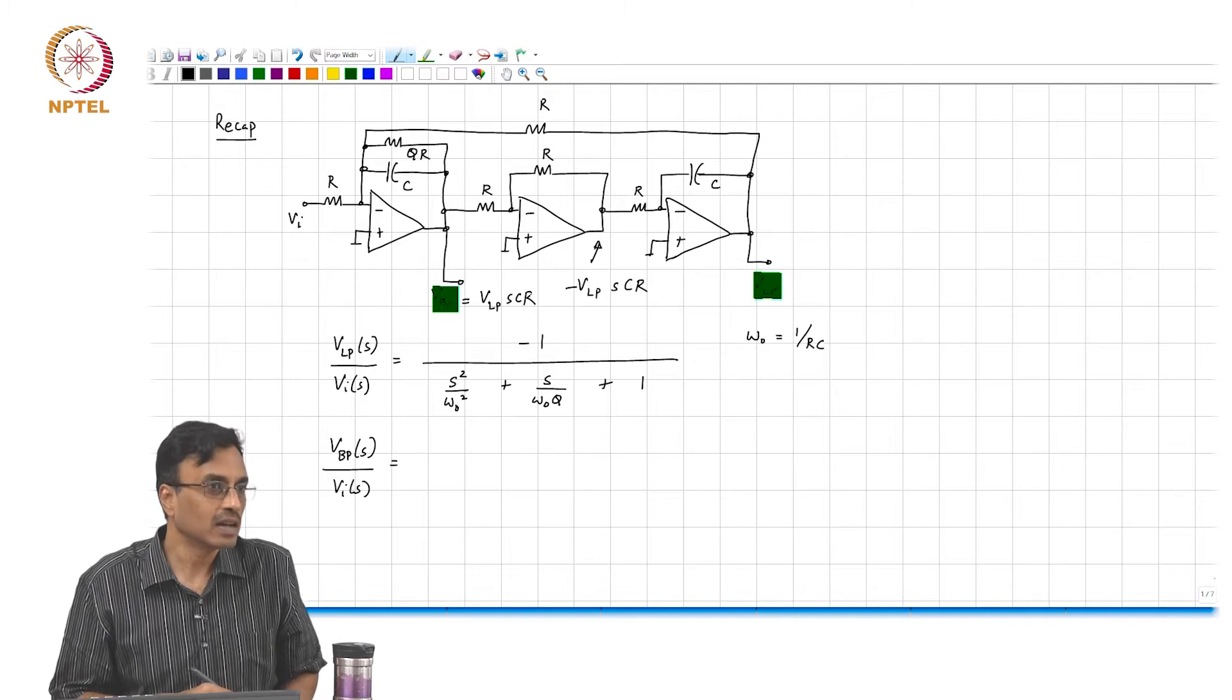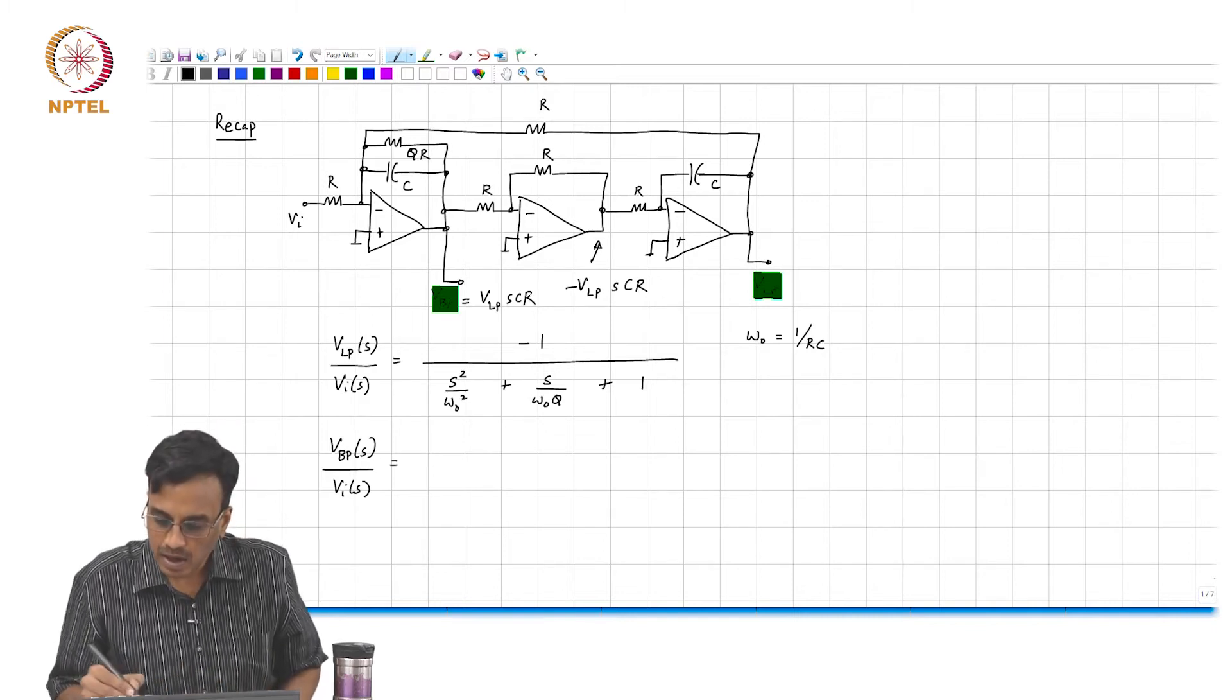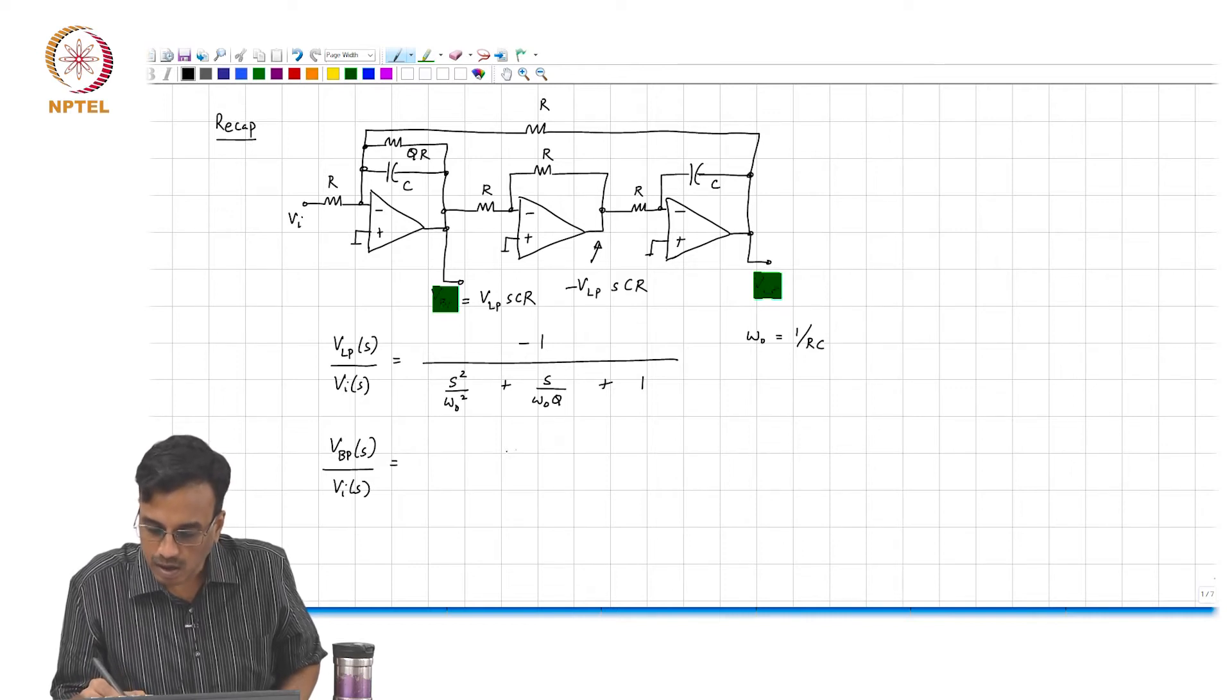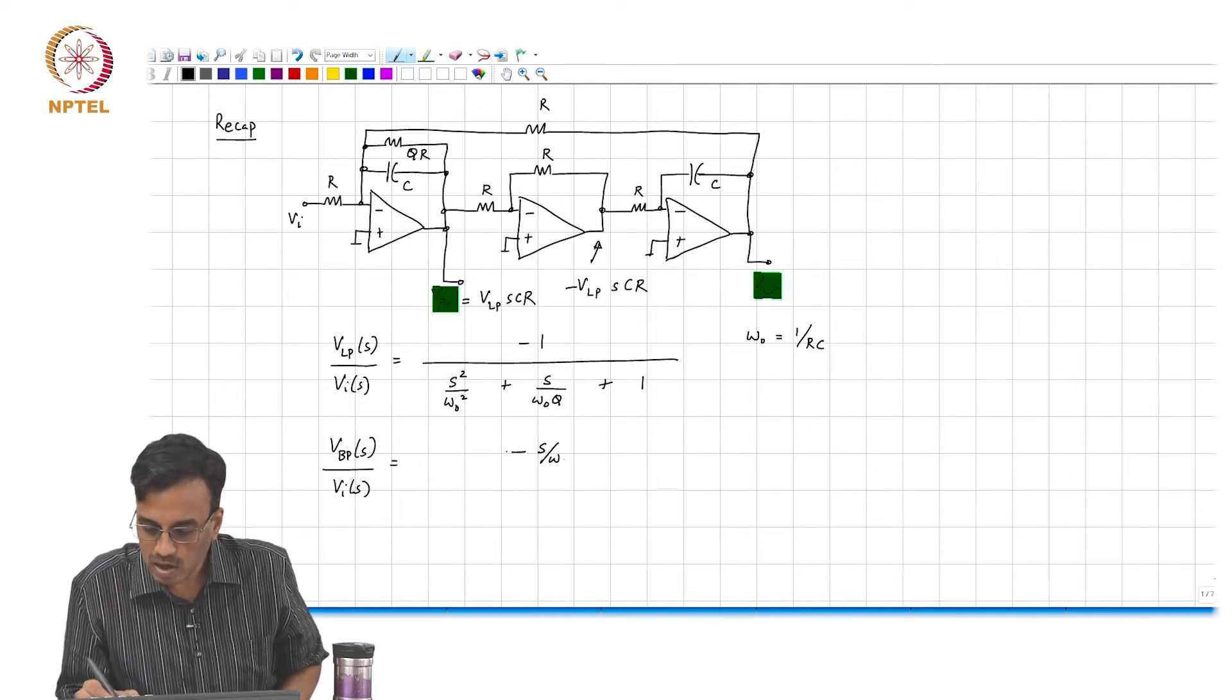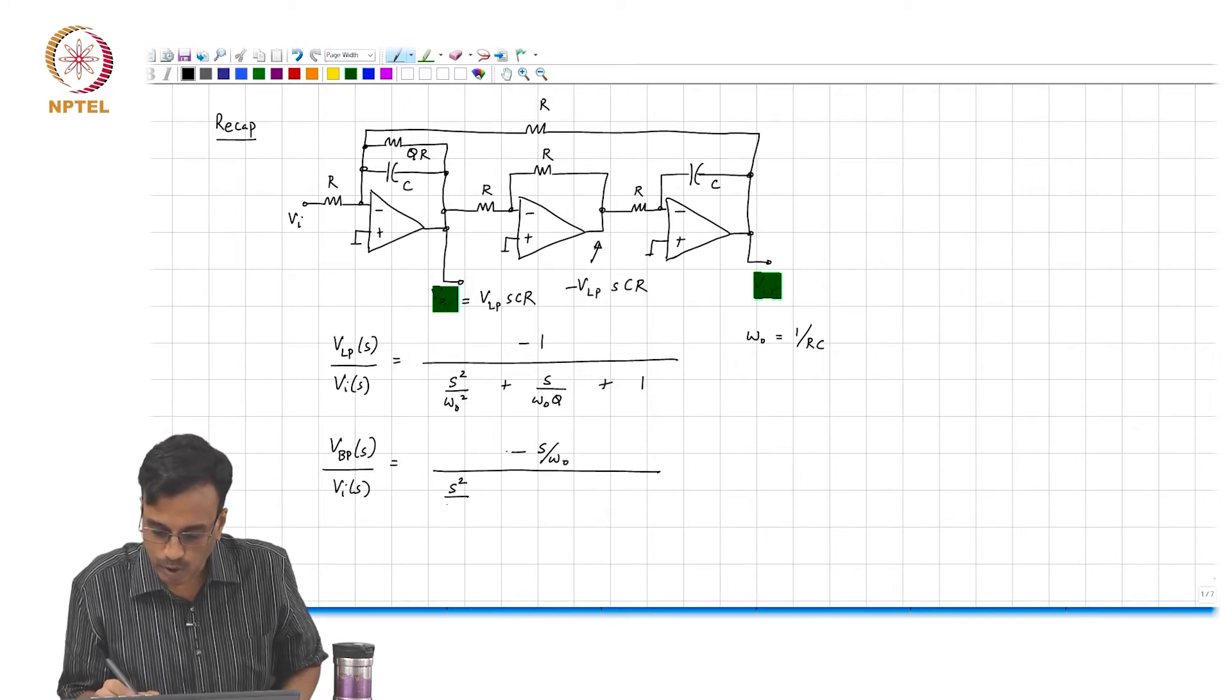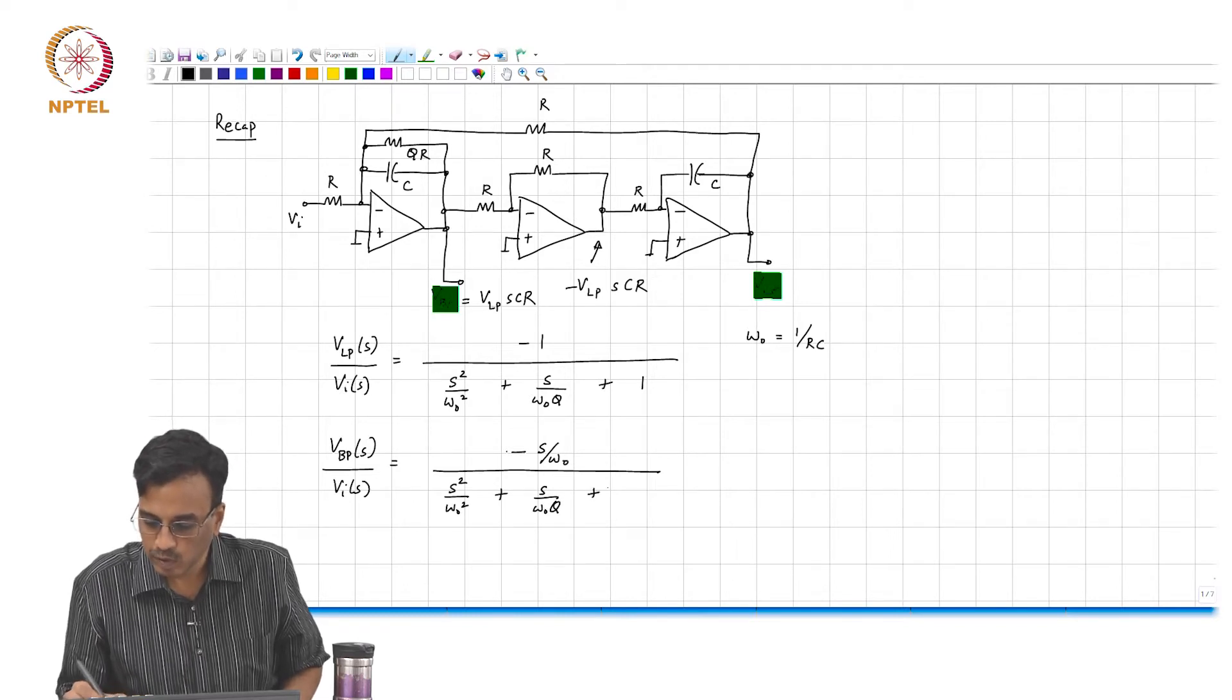What you get is an inverting band pass transfer function and that is basically, as you can see, minus s over omega naught divided by the same denominator s square by omega naught square plus s over omega naught q plus 1.